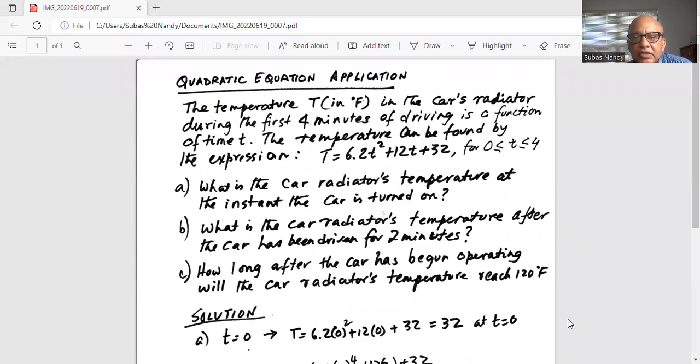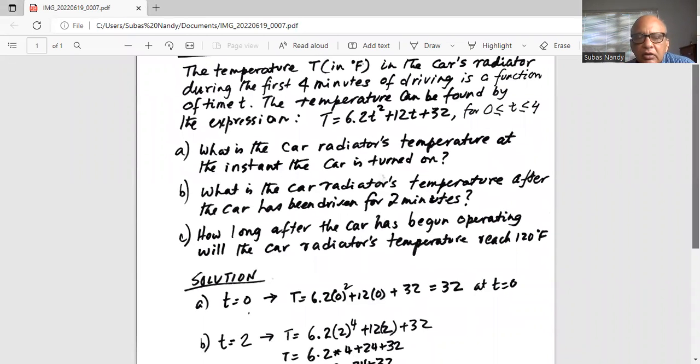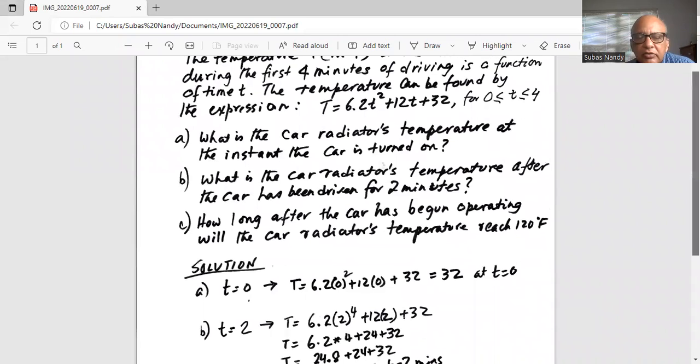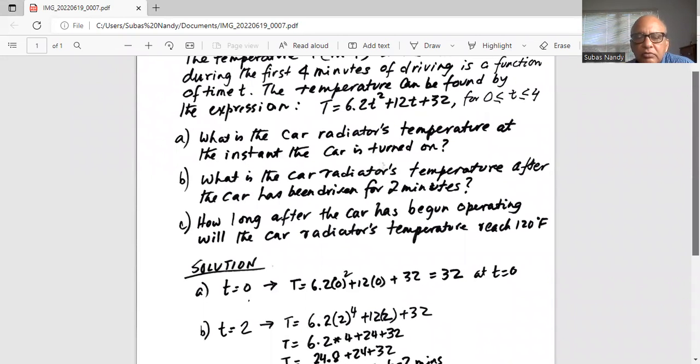What is the car radiator's temperature at the instant the car is turned on? Part A: When the car is turned on, t = 0. So temperature is 6.2(0)² + 12(0) + 32. The first two terms are zero because they're multiplied by 0. So the answer is T = 32°F at t = 0.